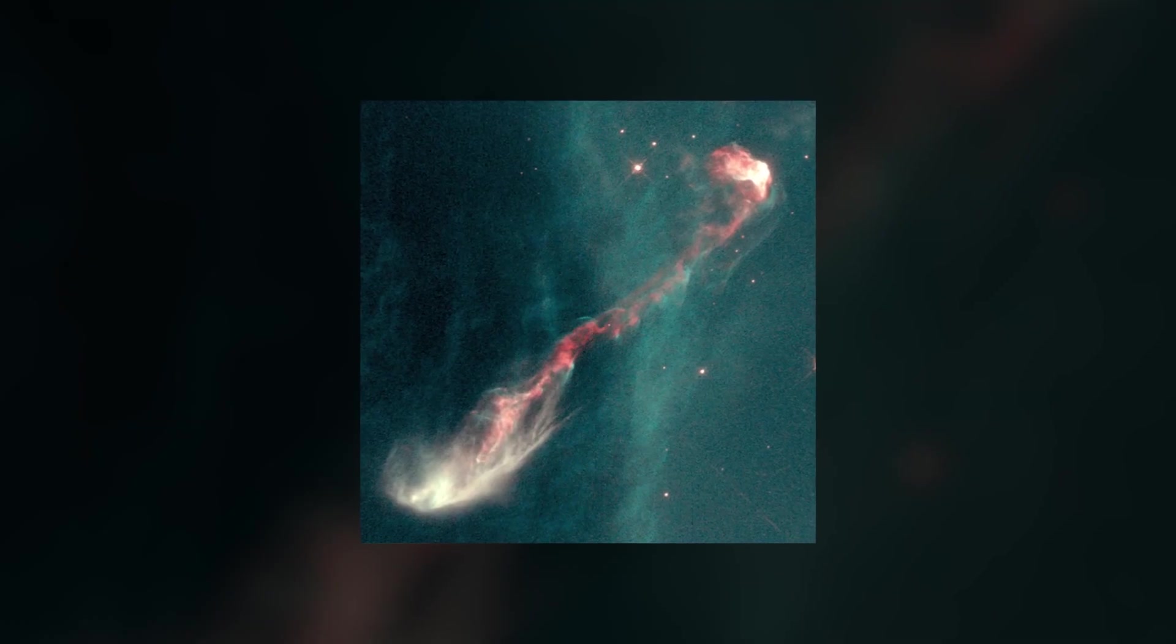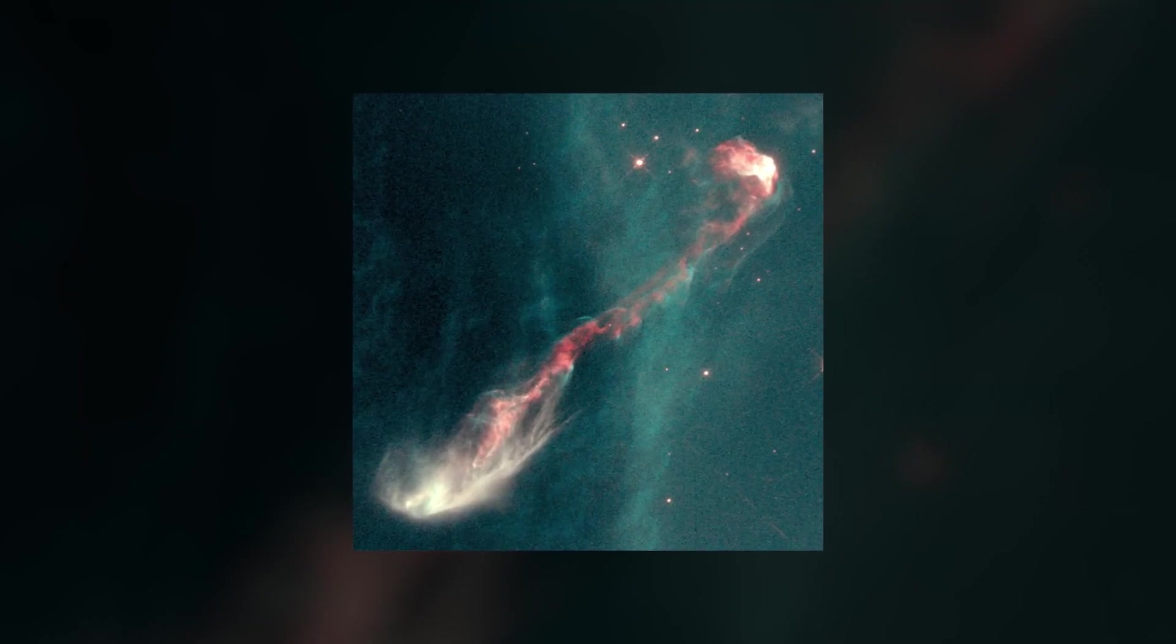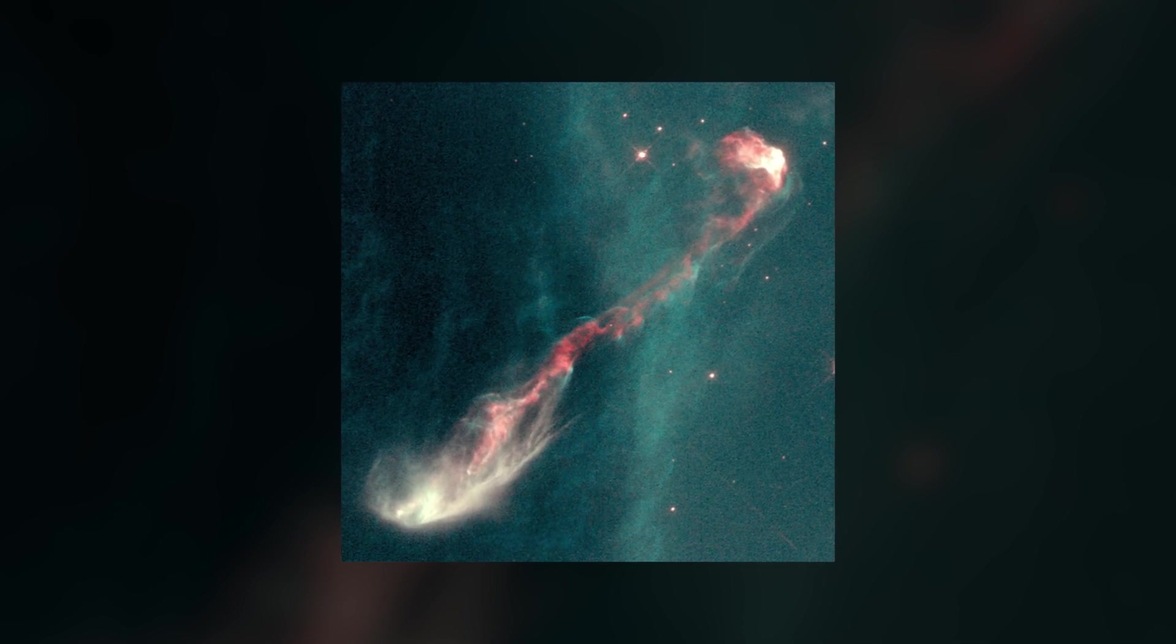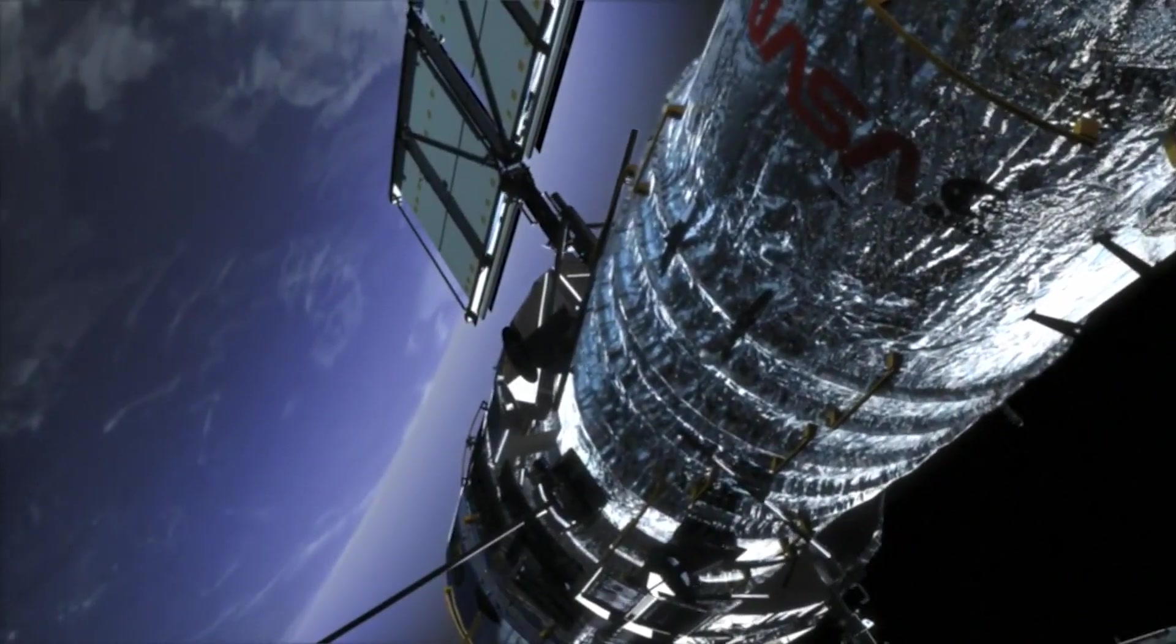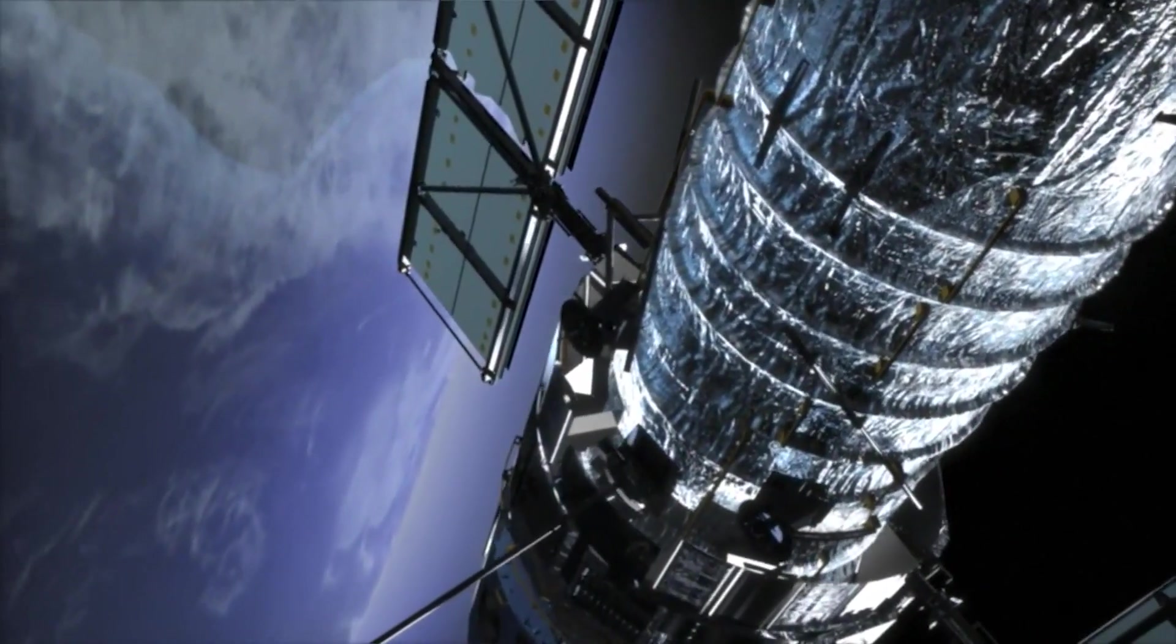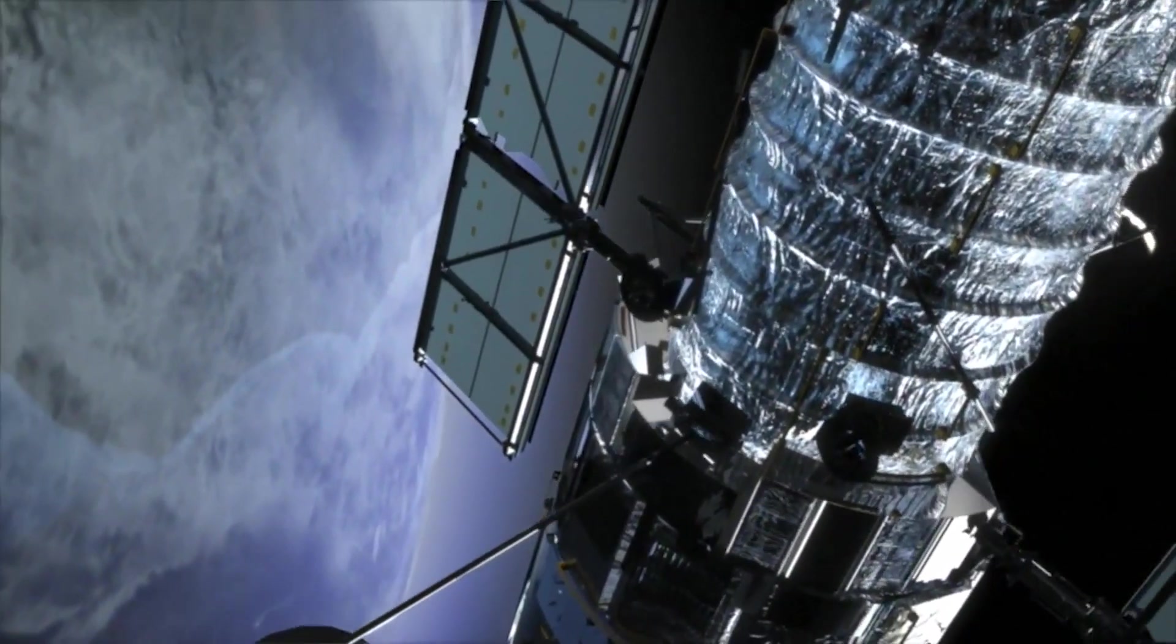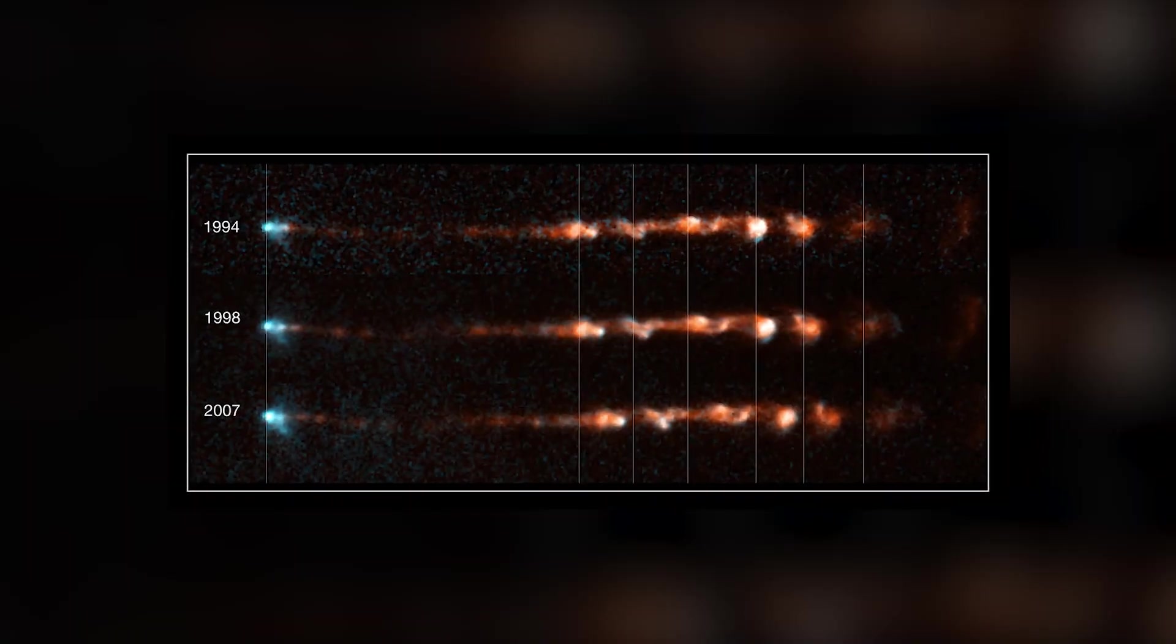Billowing across the lower left of this image. Herbig-Harrow objects are bright patches of gas or nebulosity near newborn stars. It's not the first time Hubble has caught this object on camera. The telescope trained its eye on the area called HH34 between 1994 and 2007.